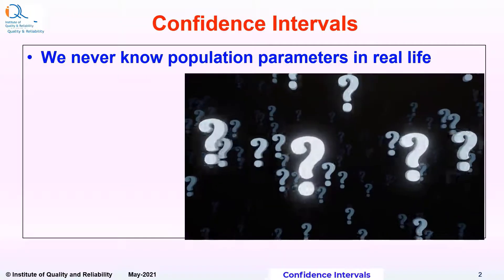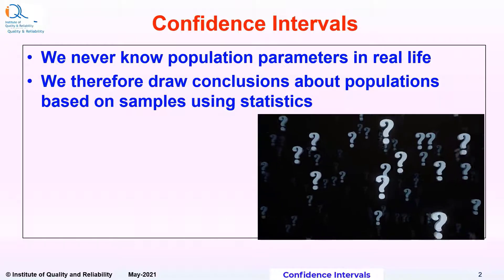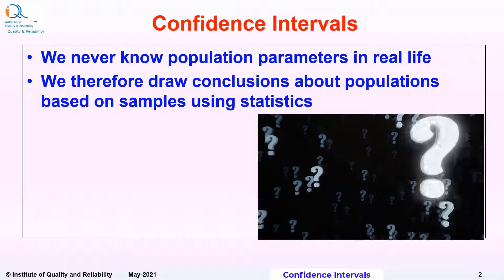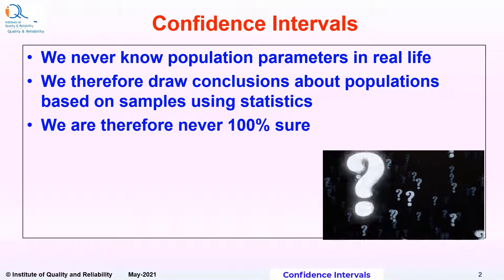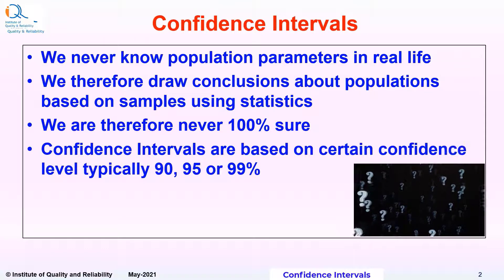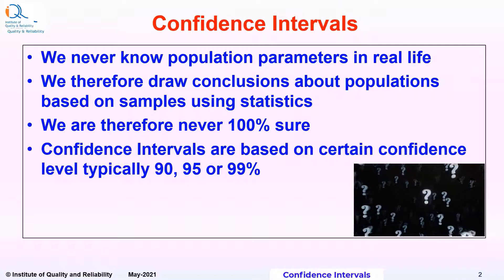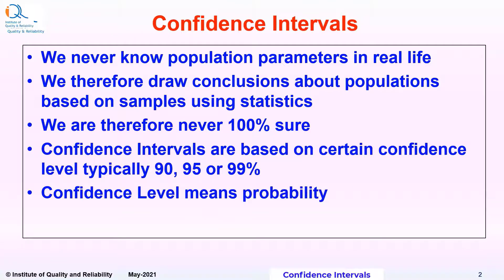We never know population parameters in real life. We therefore draw conclusions about populations based on samples using statistics. We are therefore never 100% sure about our decisions. Confidence intervals are based on certain confidence levels, typically 90, 95 or 99%. Confidence level means nothing but probability.